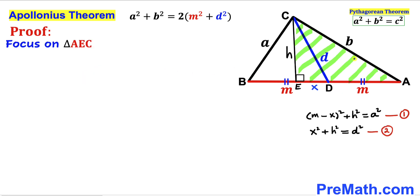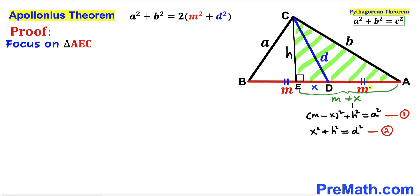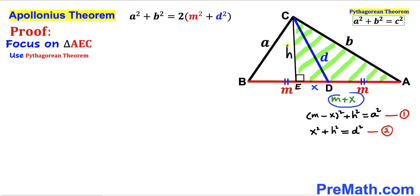Focusing on right triangle AEC: the side AE has length m + x. Applying the Pythagorean theorem with hypotenuse b and legs (m + x) and h, we get (m + x)² + h² = b². This is equation number three.